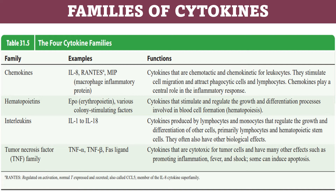Hematopoietins are cytokines that stimulate and regulate the growth and differentiation processes involved in blood cell formation. Interleukins are cytokines produced by lymphocytes and monocytes that regulate the growth and differentiation of other cells — primarily lymphocytes and hematopoietic stem cells — and often have other biological effects. The tumor necrosis factor family, also known as TNF, includes cytokines that are cytotoxic for tumor cells and have many other effects such as promoting inflammation, fever, shock, and some can induce apoptosis.